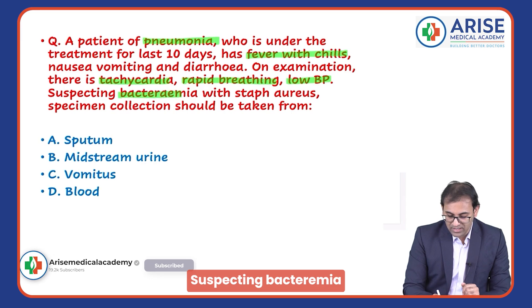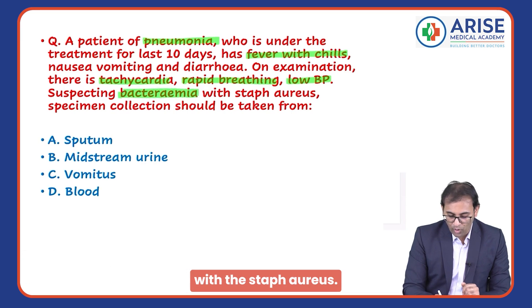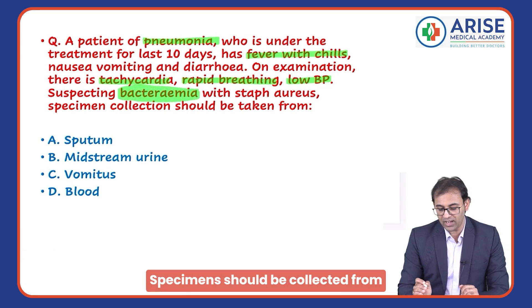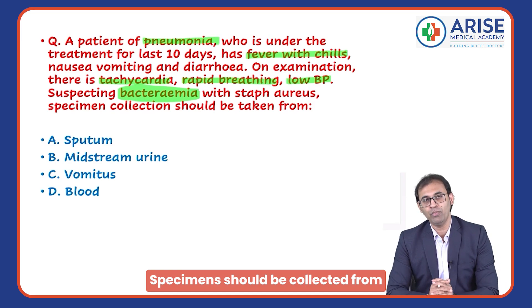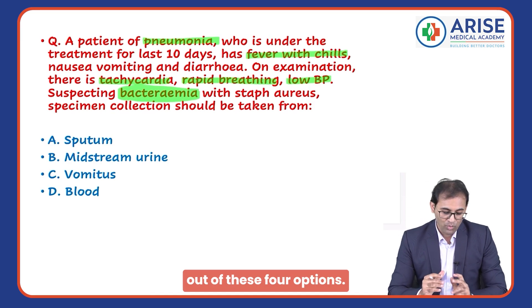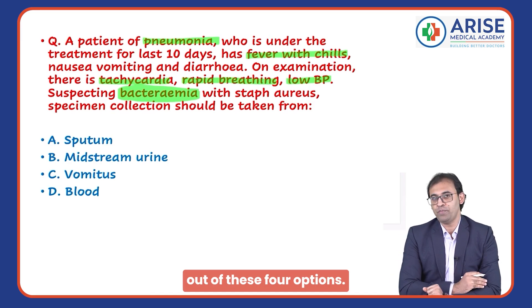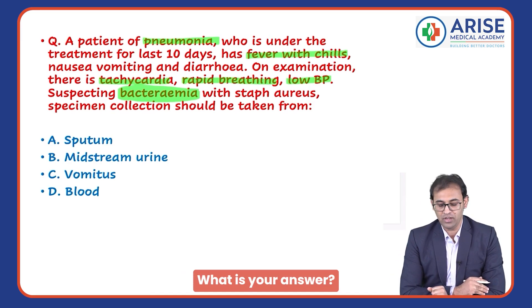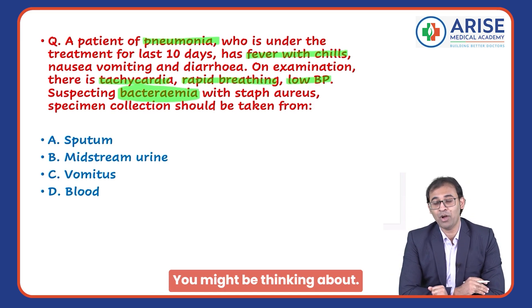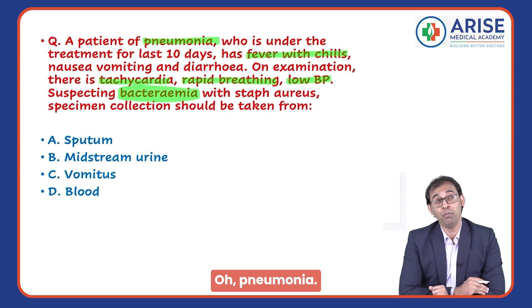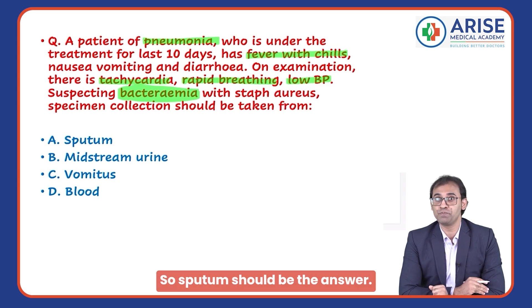Suspecting bacteremia with Staph aureus — from these four options, what specimen should be collected? You might be thinking: it's pneumonia, so sputum should be the answer.